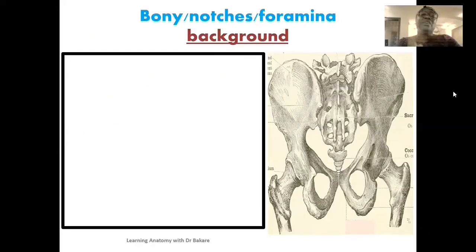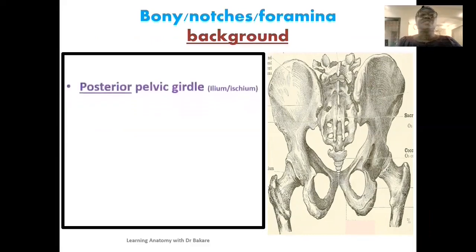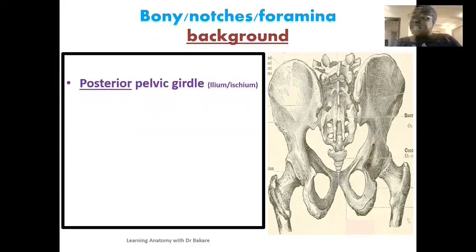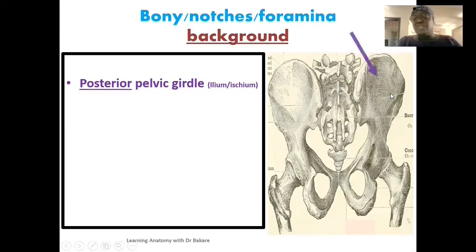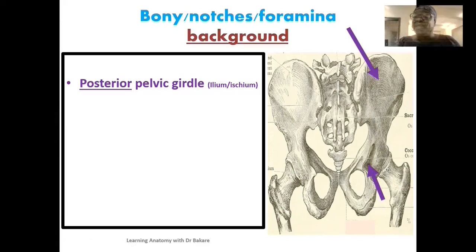Let's look at the bony landmark of the gluteal region. The bony landmark creates the background onto which other structures are aligned. We have the posterior surfaces of the ilium and the ischium — the pubis, being located at the anterior region, does not contribute. The posterior surface of the ilium is highlighted in purple, and the posterior surface of the ischium is also highlighted in purple. These two bones form the bony alignment of the gluteal region.